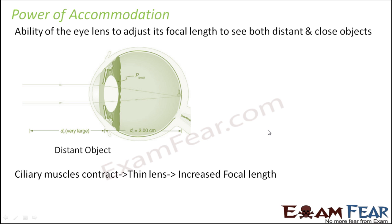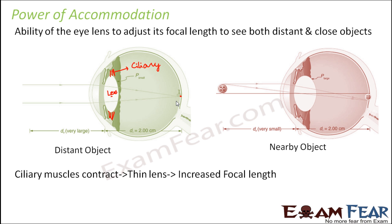When we look at a distant object, the ciliary muscles — attached on both sides of the lens — contract. When the ciliary muscles contract, the lens becomes thinner. As the lens thins, the focal length increases, meaning the point where rays of light meet (the focus) is farther from the lens. As a result, the image is formed on the retina.